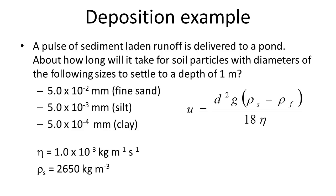Let's consider some examples. Imagine we have a pulse of sediment-laden runoff delivered into a pond. We want to calculate approximately how long it would take for soil particles with the following diameters to settle to a depth of one meter: fine sand at 5×10⁻² mm, silt at 5×10⁻³ mm, and clay at 5×10⁻⁴ mm. We'll set viscosity to 1×10⁻³ kg/m/s and assume a solid density of 2,650 kg/m³.